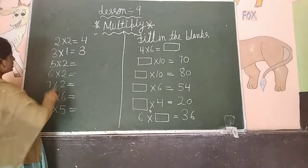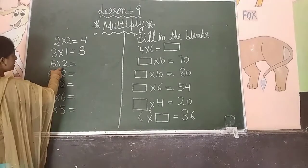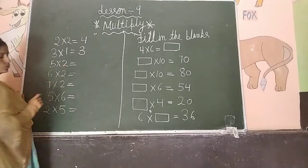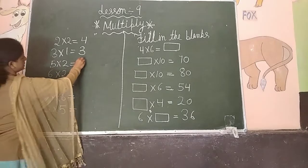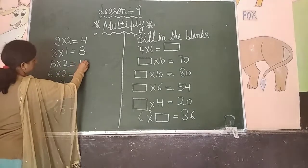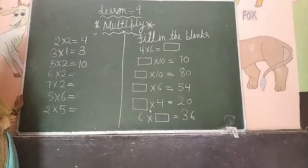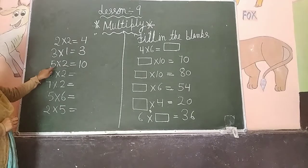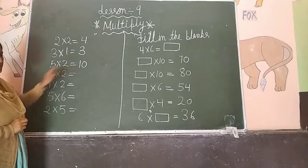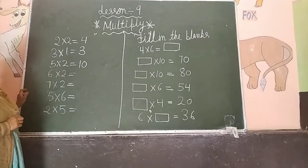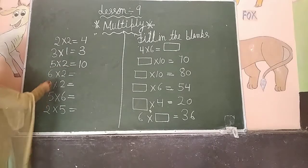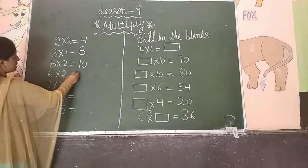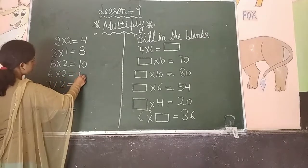Understood? 5 multiply 2 — 5 twos are 10. So 5 multiplied by 2 is equal to 10, or 5 twos are 10. Next: 6 twos are 12.